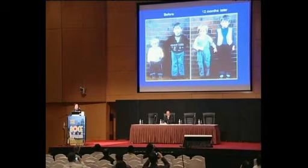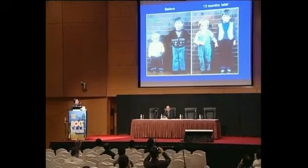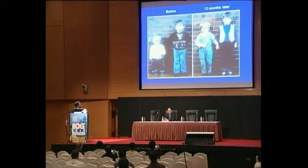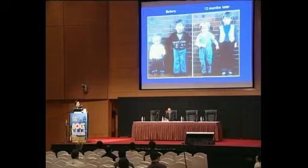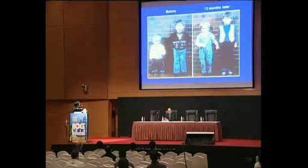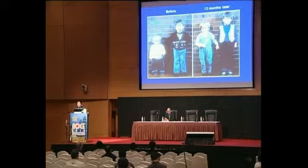Growth hormone use in pediatrics is well known to you. On the left are two siblings — you can see that the elder of the two boys is three brick lengths shorter than his younger brother because he's got growth hormone deficiency. And 12 months later, he has grown three brick lengths while his younger brother has grown one. A striking example of the biology of growth hormone as a growth-promoting agent.